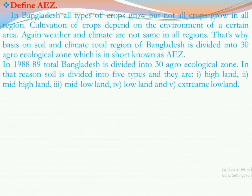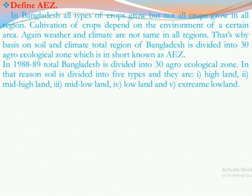First of all, let us know about what is AEZ. In Bangladesh, all types of crops grow but not all crops grow in all regions. Cultivation of crops depends on the environment of a certain area. Weather and climate are not the same in all regions. Based on soil and climate, the total region of Bangladesh is divided into 30 Agroecological Zones, known in short as AEZ.